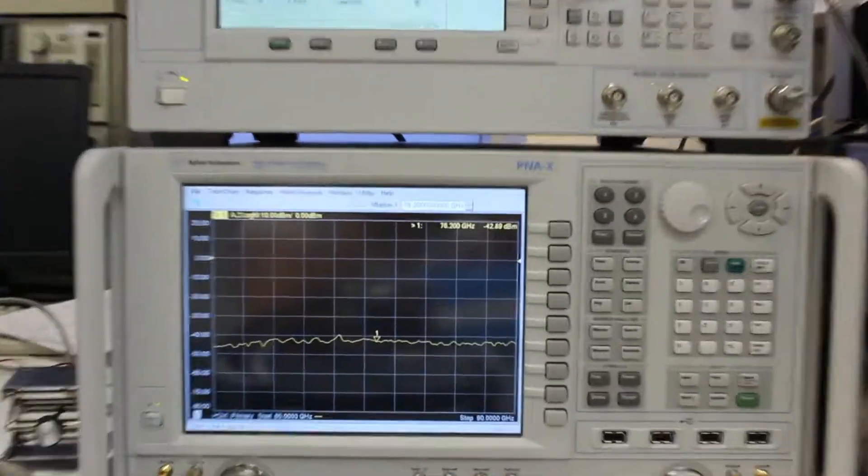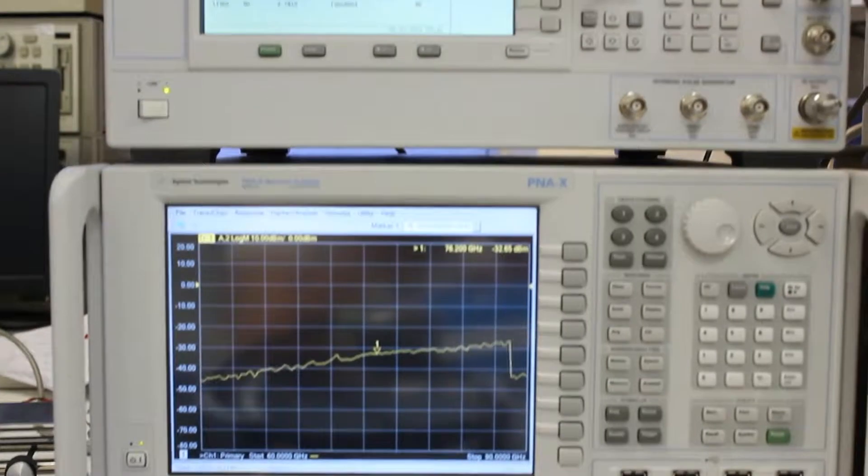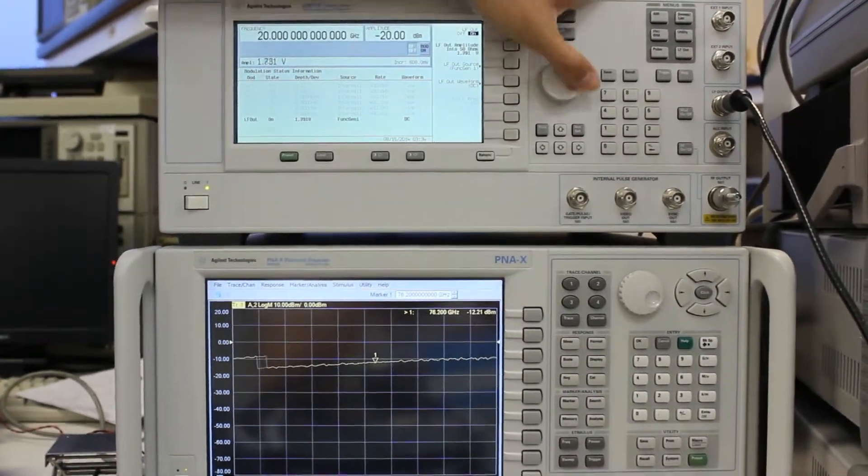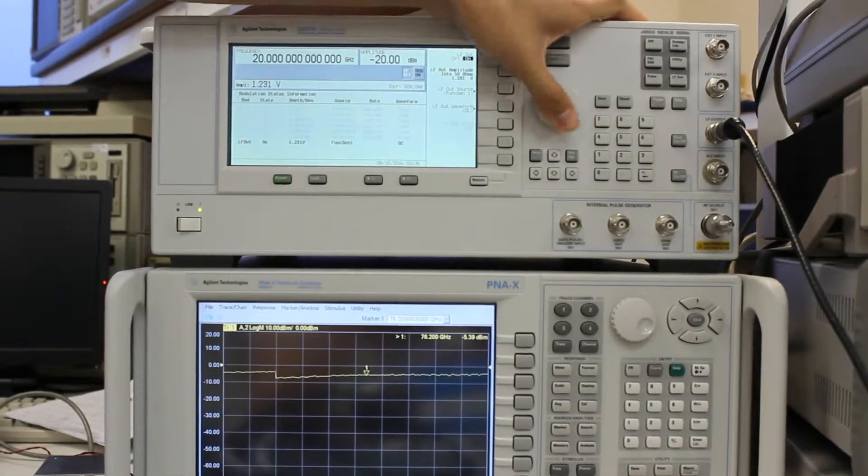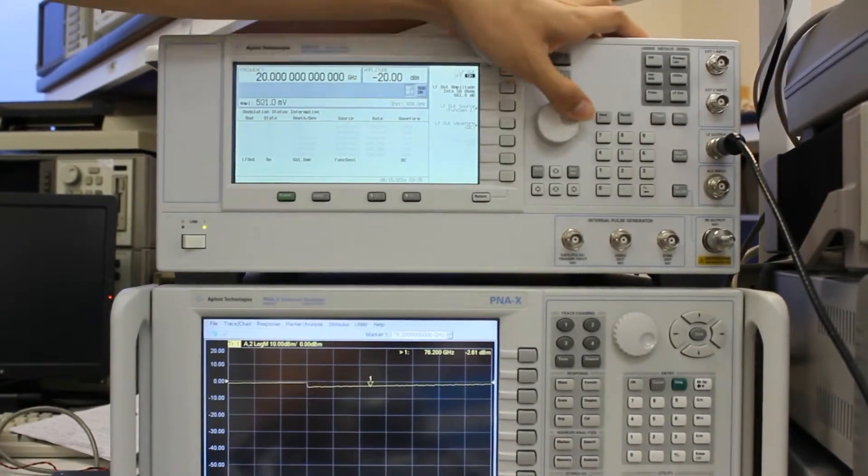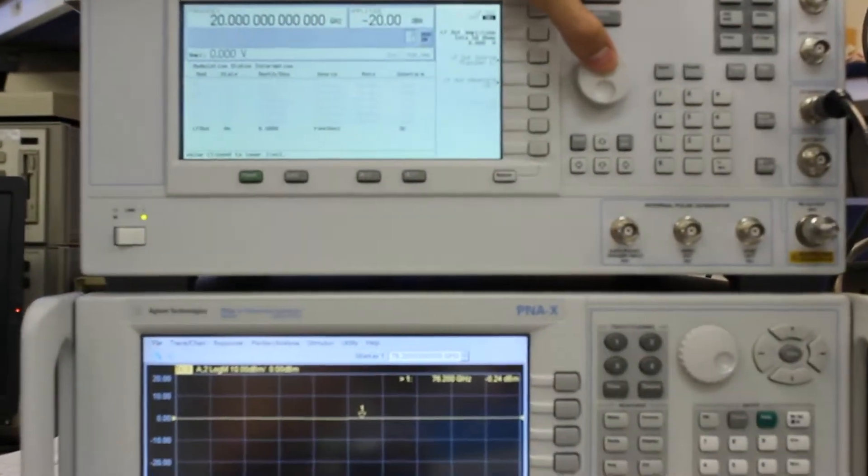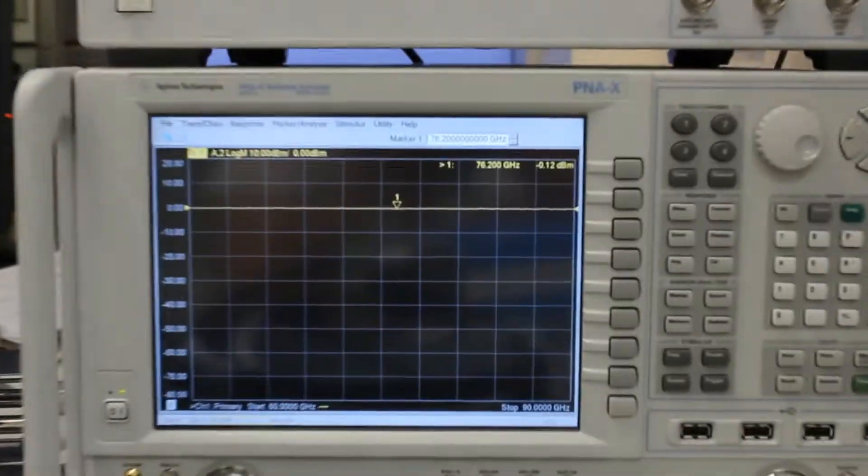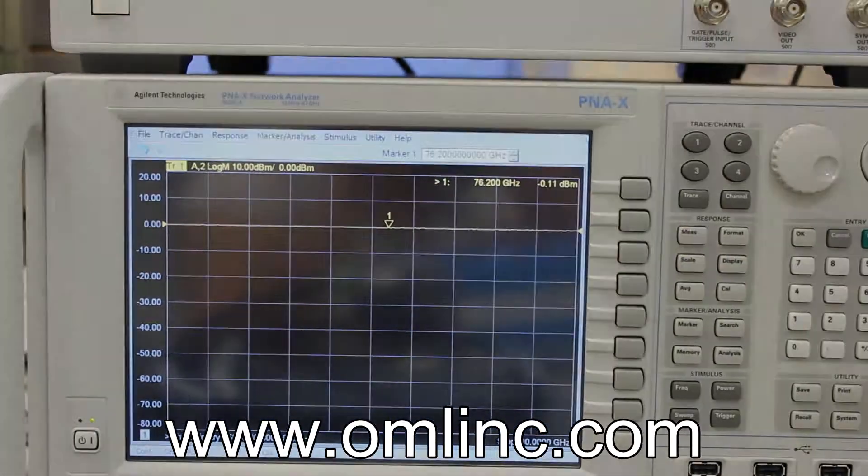This is just one method of showing how to control the electronic attenuation of the source module. In video part 2, we will show you how to also control the electronic attenuation by utilizing a computer software program. For more information on this and other OML products, please feel free to visit OML's webpage at www.omlinc.com.